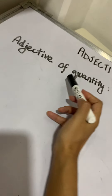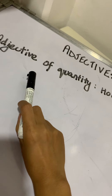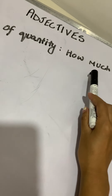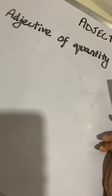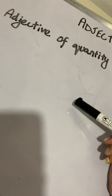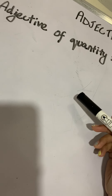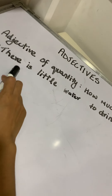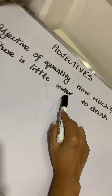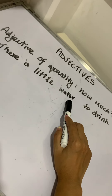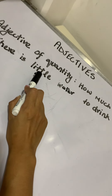Next, we have adjective of quantity. An adjective of quantity answers the question "how much?" Adjective of quantity mostly describes uncountable nouns — nouns which you cannot count, like water. For example: there is little water to drink. The noun is water. How much water? Little. So, little is the adjective here in this sentence.